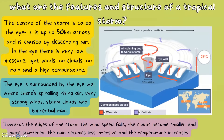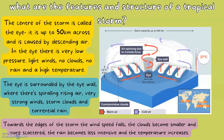What are the features and structures of a tropical storm? The centre of the storm is called the eye. It is up to 50km across and is caused by descending air. In the eye, there is very low pressure, light winds, no clouds, no rain and a high temperature.